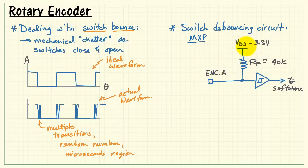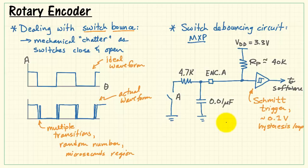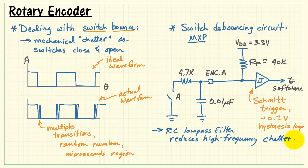The encoder input has an internal pull-up of 40 kiloohms approximately. That feeds a Schmidt trigger with a hysteresis of approximately 0.1 volts, and that cleans up the signal coming in, but it still is not enough to deal with the switch chatter problem. So in between the encoder switch and the encoder input, we need to insert an RC low-pass filter, and this greatly reduces the high-frequency chatter of the switches.